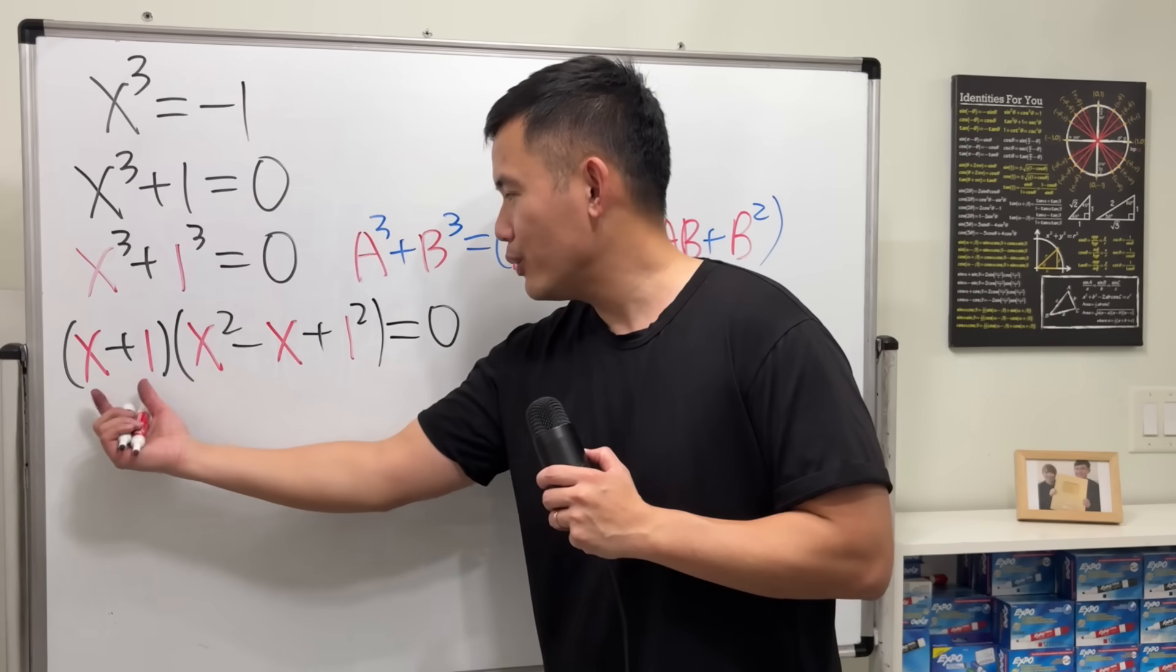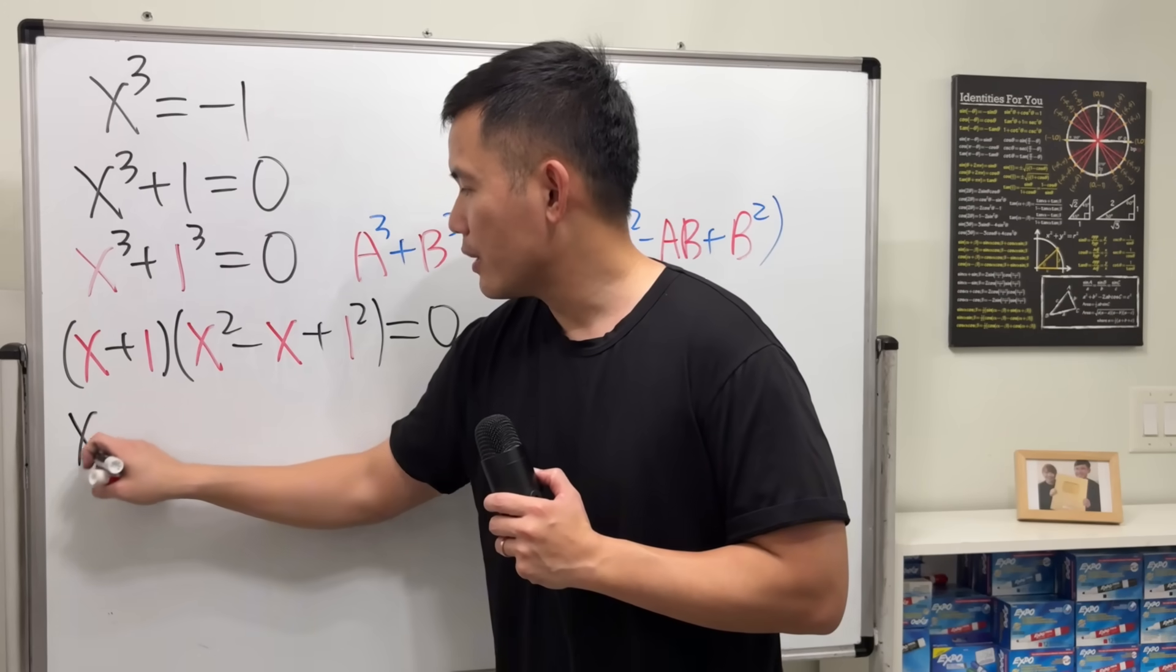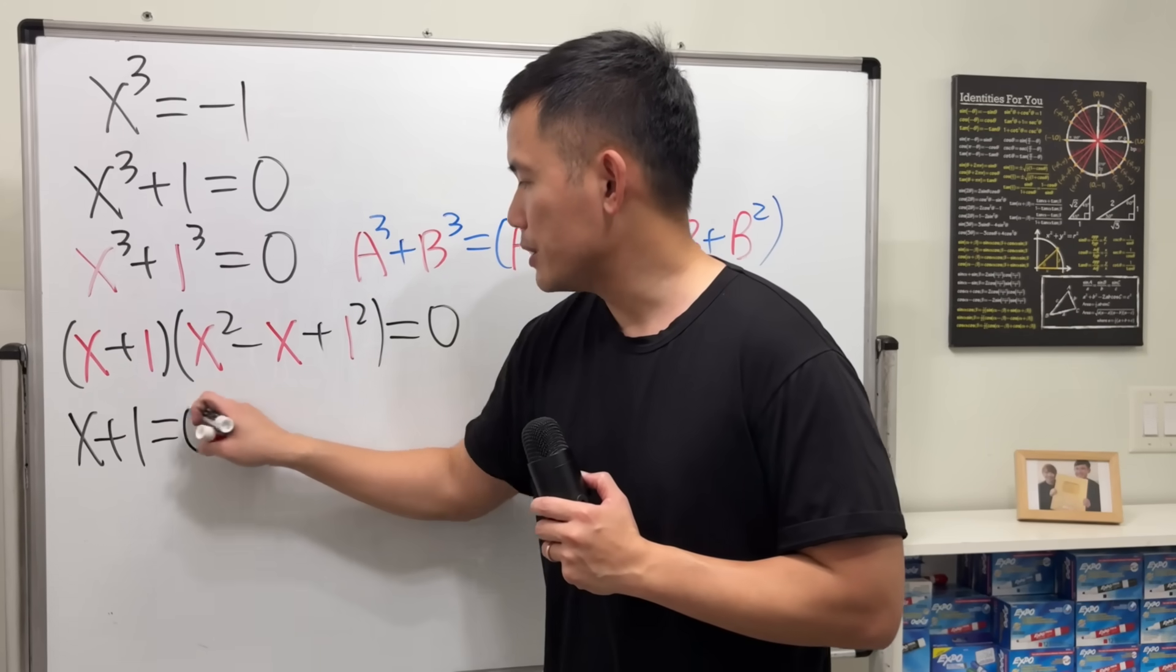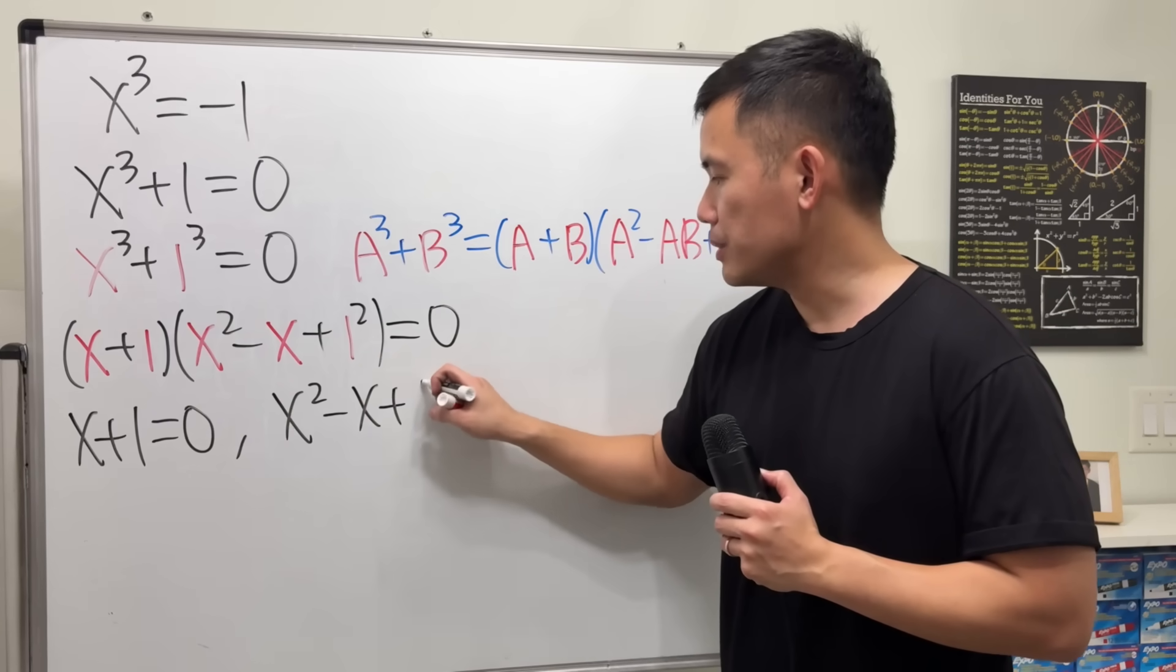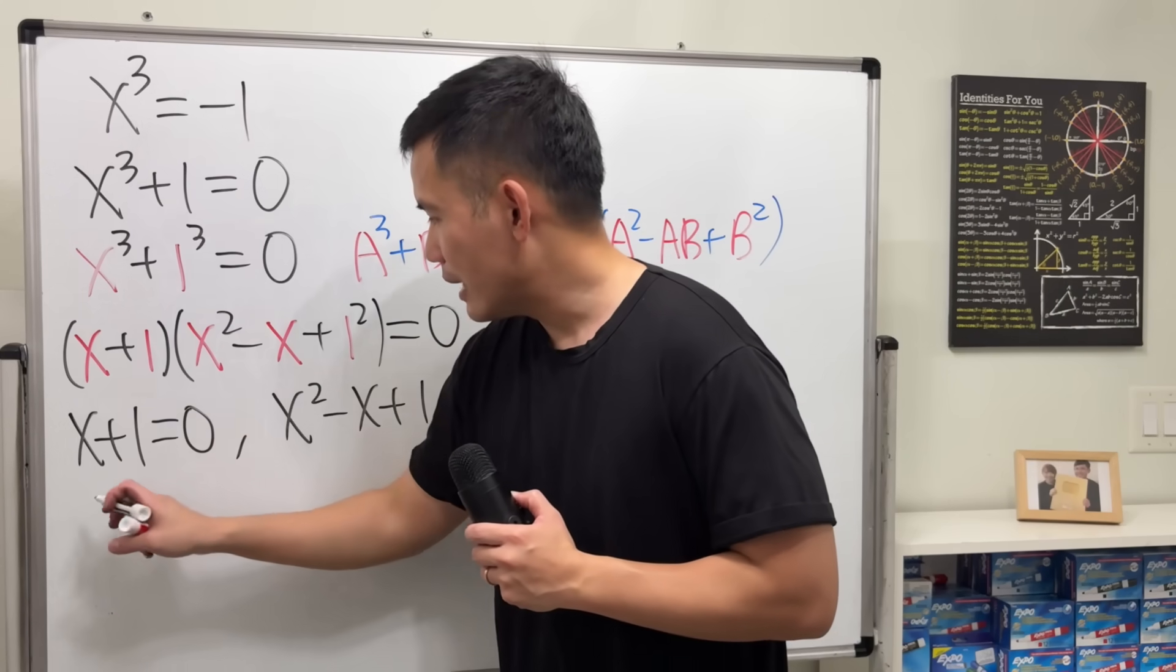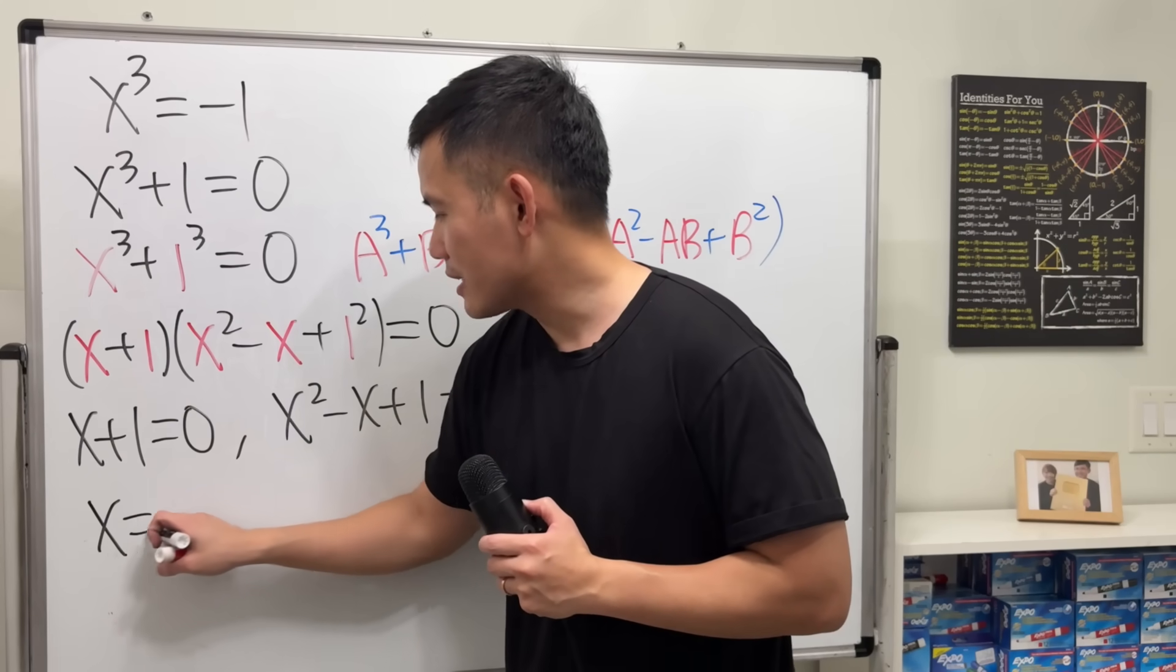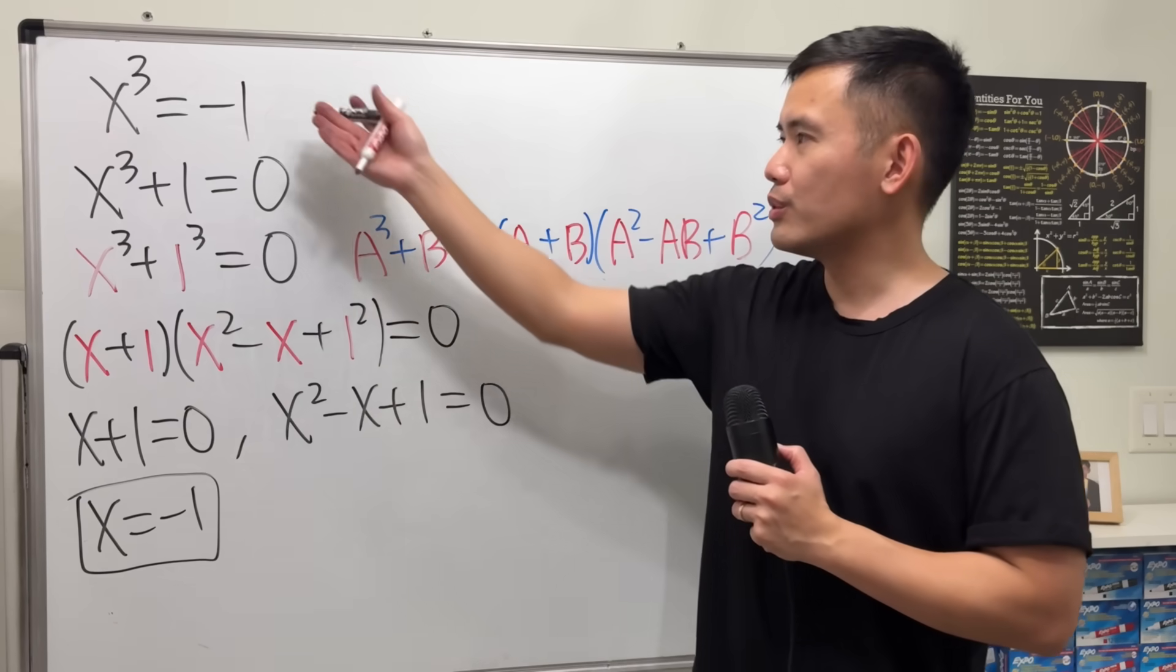Now, we have a product of two things is equal to 0. So that means either the first factor, which is x plus 1, that has to be equal to 0, or the other factor has to be equal to 0. 1 squared is 1, so that's what I write down. Okay, from here, subtract 1 to both sides. This is how we get x is equal to negative 1, which is the only real solution to this equation.